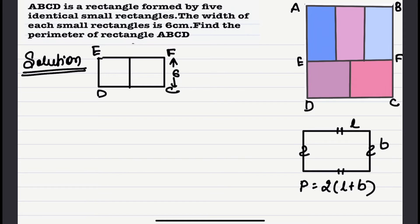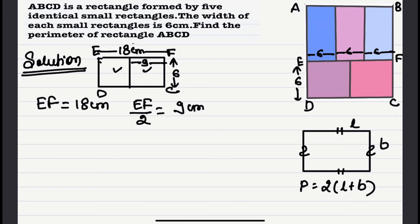Now the width of this rectangle is six centimeters. It is given in the figure and this width of a small rectangle is also six centimeters since all the rectangles are identical. So I can write this as 18 centimeters. Now this is six centimeters and these two rectangles are equal. So I can divide EF is equal to 18 centimeters, which is EF upon two equal to nine centimeters.